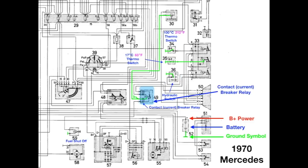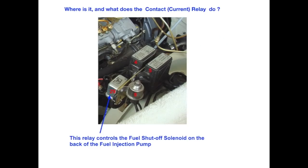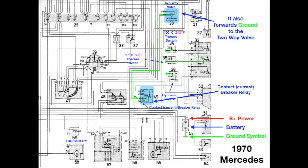We also have the contact breaker relay. Sometimes, it's just referred to as the current relay, and it gets its ground from being mounted as well. Where is it, and what does it do? This relay controls the fuel shut-off solenoid on the back of the fuel injection pump. Now, look at the diagram. It also forwards that ground up to the two-way valve.